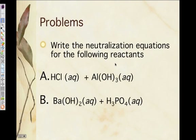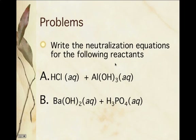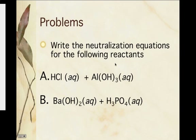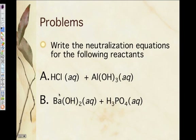What would be the neutralization reactions for these equations? So we have HCl plus aluminum hydroxide — what does that yield?